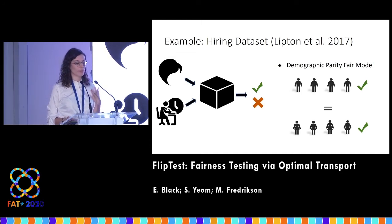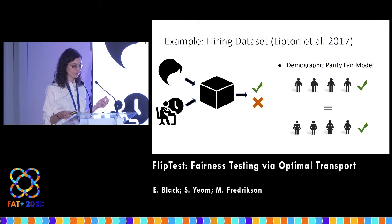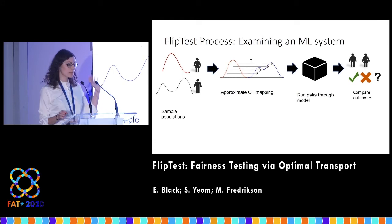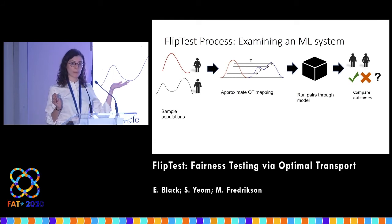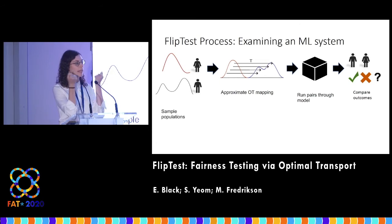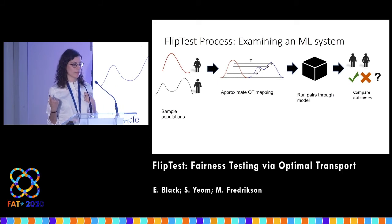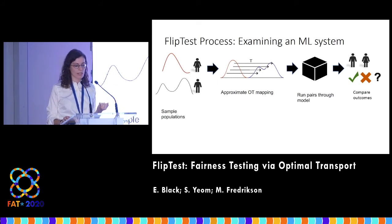So how do we test for discrimination in the system using the FlipTest process? First, we sample populations of men and women who might be applying to this job. Then we use our approximate transport mapping to get the corresponding pairs of men and women. We run these pairs through the model, and then we compare outcomes.